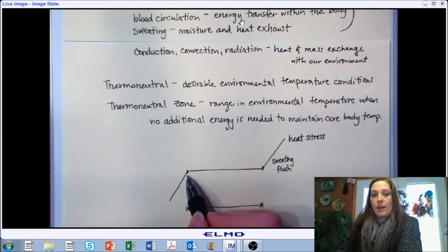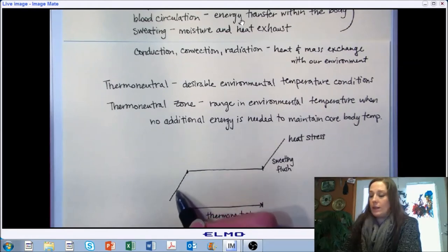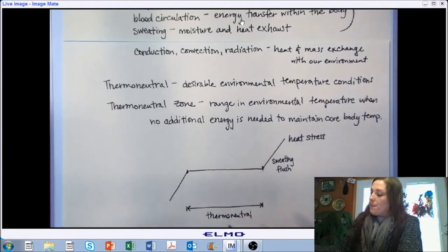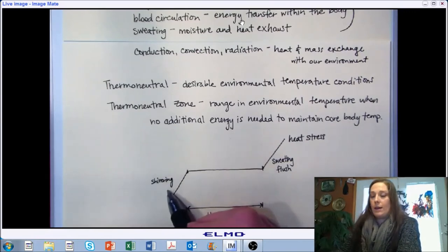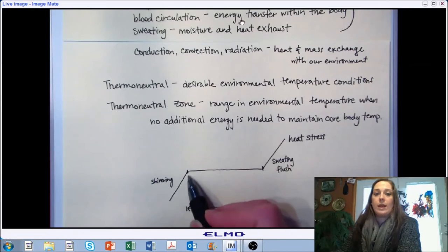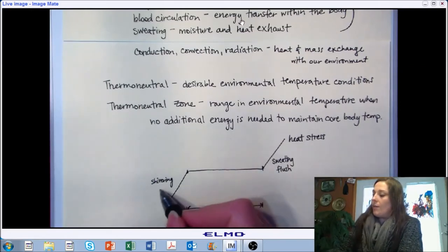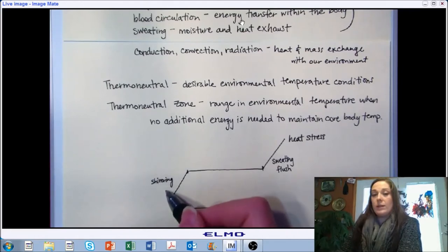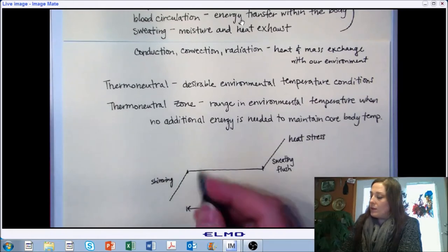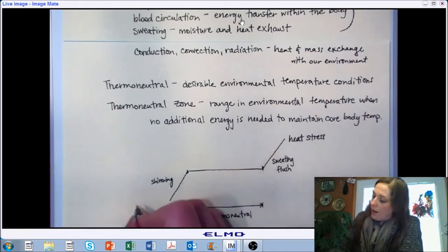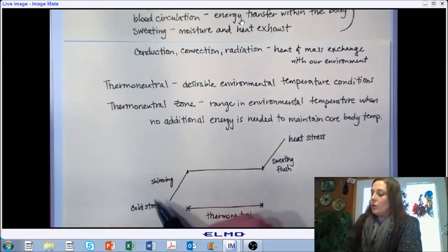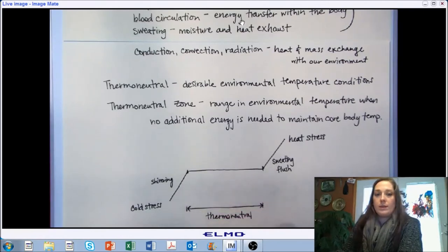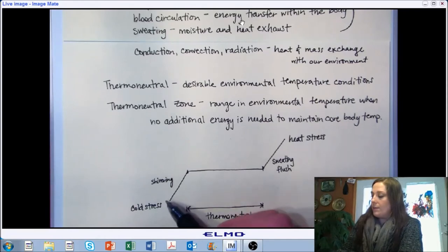If we go to the opposite end and cross a threshold where our body has to begin using energy in order to stay warm, our body will do things such as shivering, which is one way of generating heat — increasing metabolism to generate more heat to try to maintain core body temperature at a steady state. Our bodies will also reduce the amount of blood circulating to the surface to reduce heat exchange to the environment. If you continue into colder and colder temperatures, you can reach a state of cold stress, with permanent damage to biological function much like heat stress.